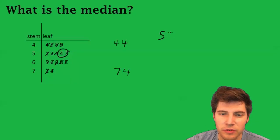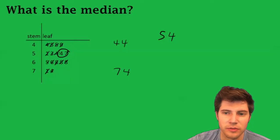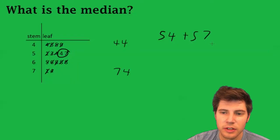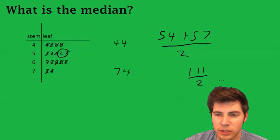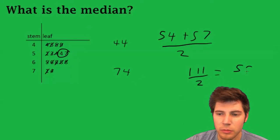So this is going to be 54, because the 5 tells us that's a 54, plus 57, divided by 2. This ends up being 111 over 2, which is 55.5.